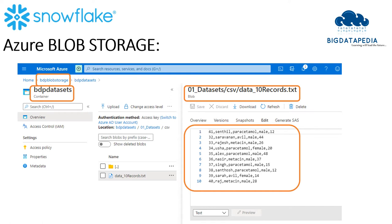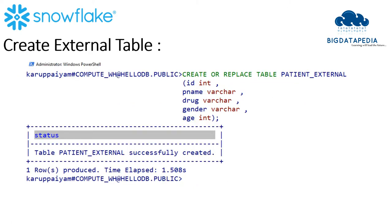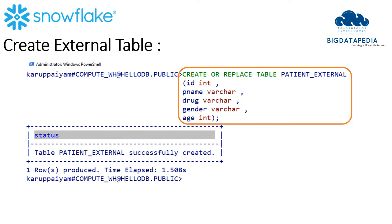We are going to load this data into a Snowflake table from this blob using stages. First let me create a table on top of the data. The command is CREATE OR REPLACE TABLE with the table name, and I declare all the column names with their data types. Once the command is executed, the table will be created.